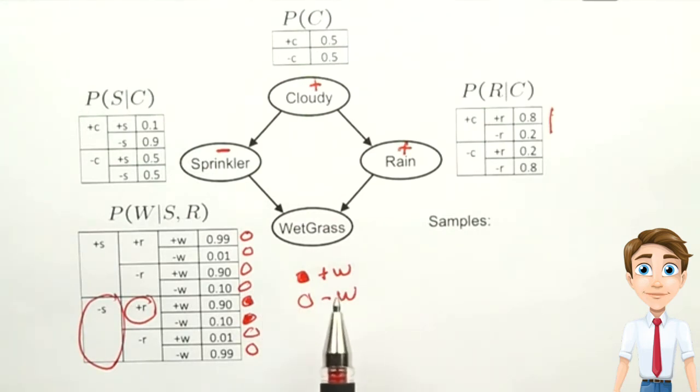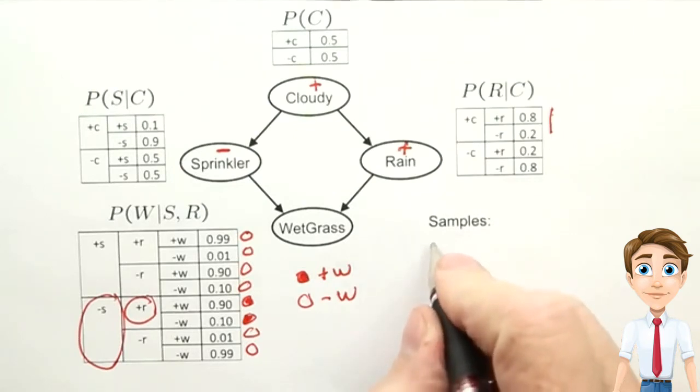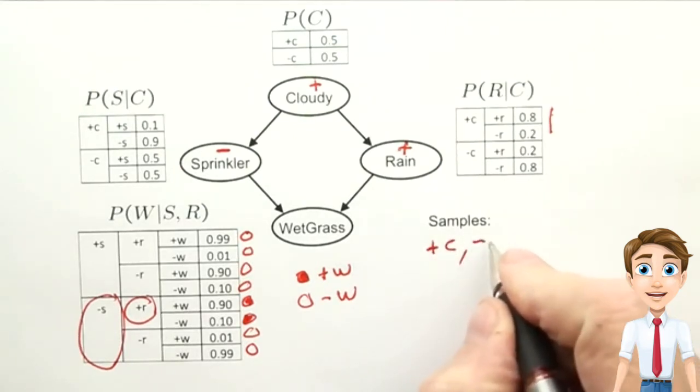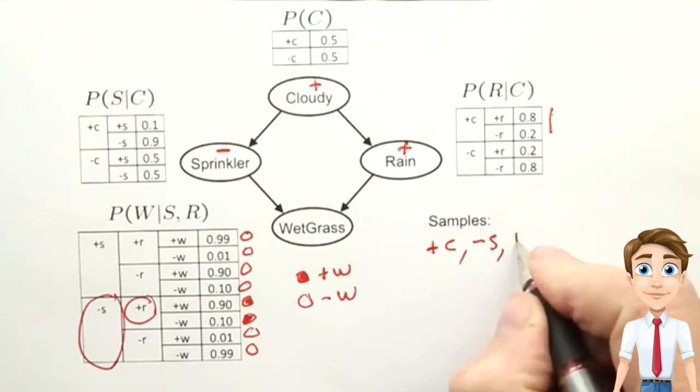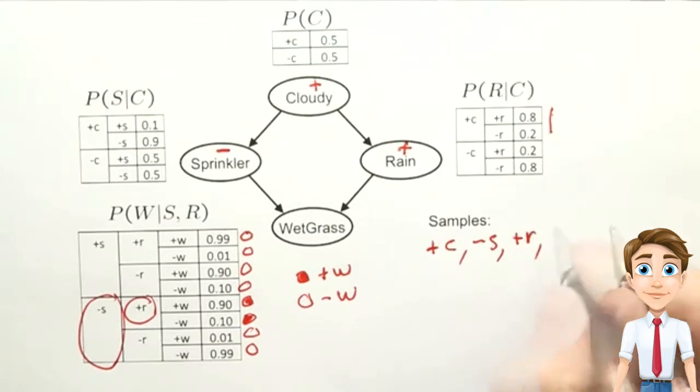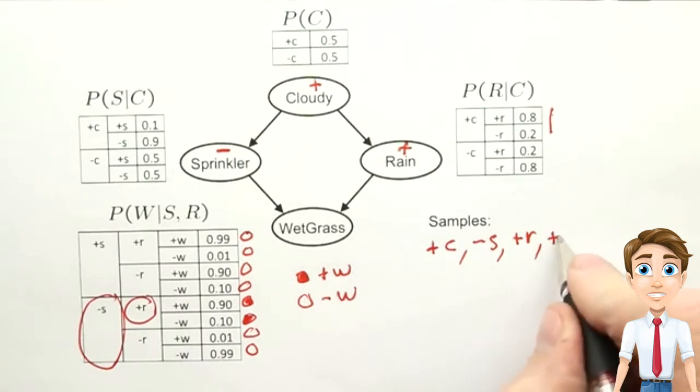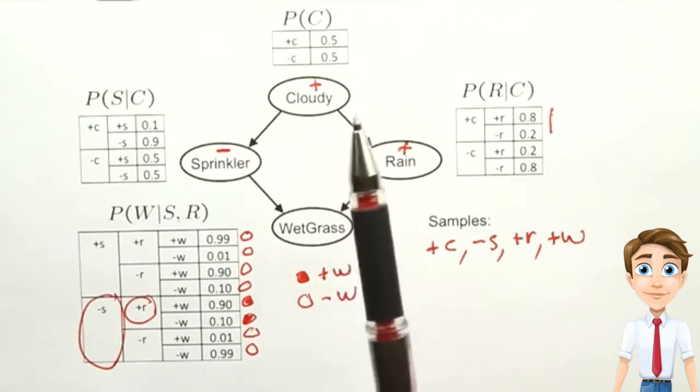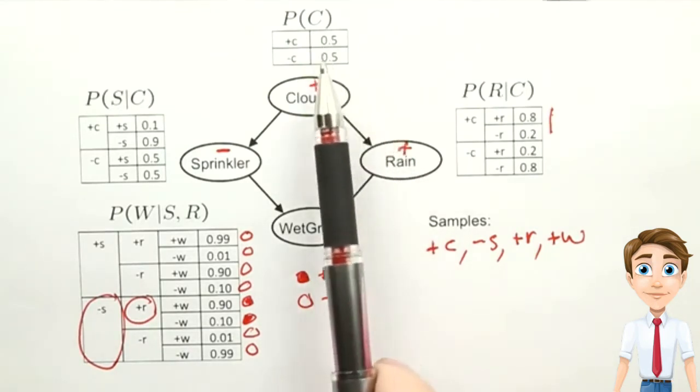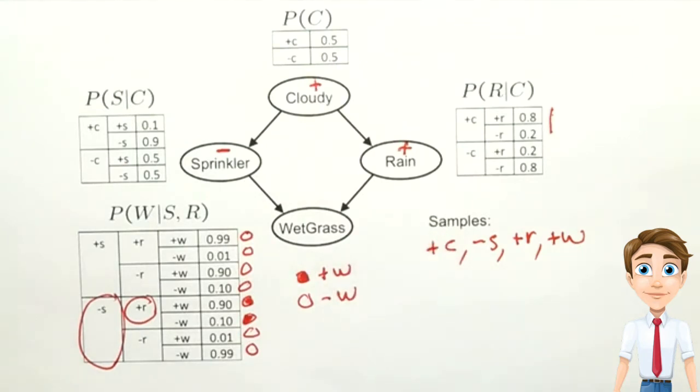And once we've done that, then we generated a complete sample. And we can write down the sample here. We had plus C, minus S, plus R, and assuming we got a probability of 0.9 came out in favor of the plus W, that would be the end of the sample. Then we could throw all this information out and start over again by having another 50-50 choice for Cloudy and then working our way through the network.